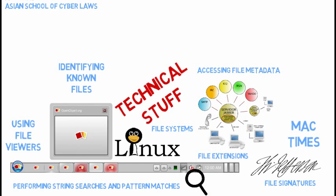File metadata provides details about any given file. For a graphic file it might provide the creation date, copyright information, description, and creator's identity. For a graphic file from a digital camera, it might include the make and model of the camera, f-stop, flash, and aperture settings. For word processing files, metadata could specify the author, the organization that licensed the software, when and by whom edits were last performed, and even user-defined comments. Special utilities are available to extract metadata from files.